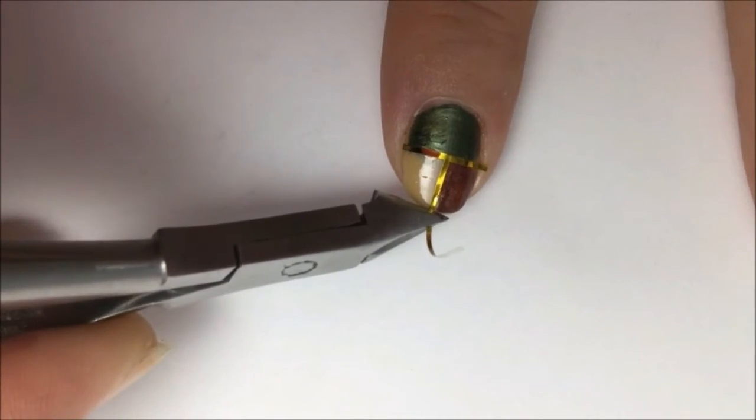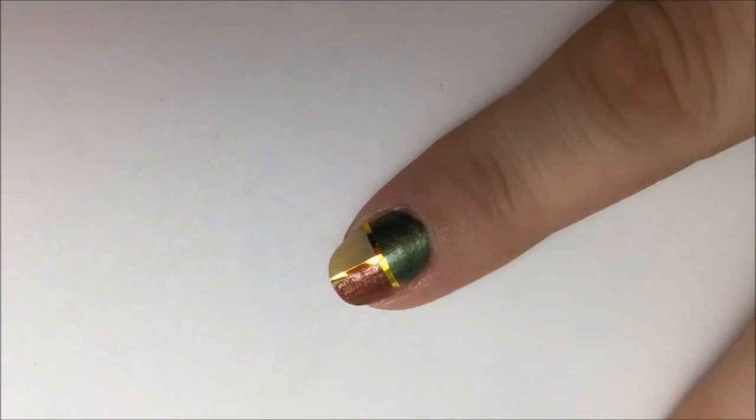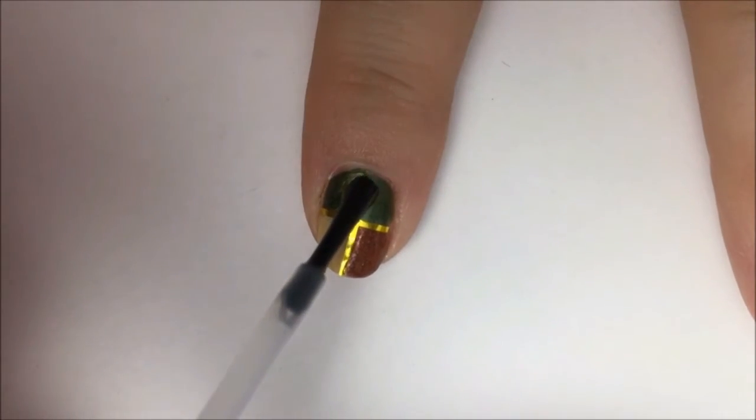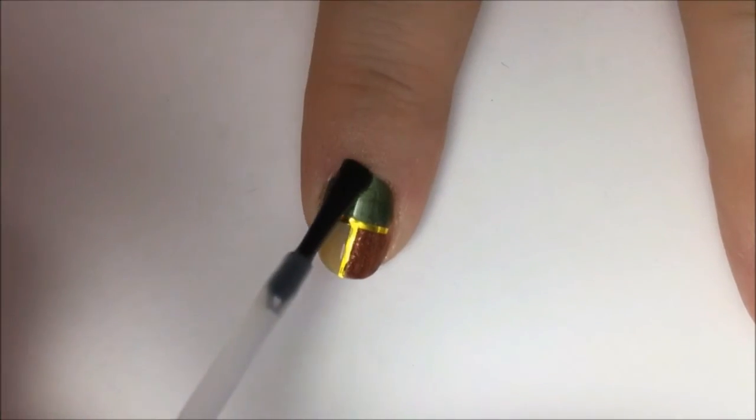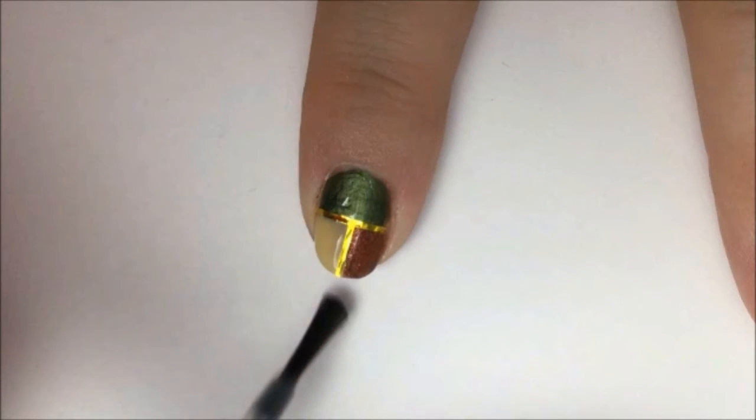Let it dry for a few minutes, then go over everything with a fast dry top coat to level everything out, protect and seal in that striping tape, make everything nice and shiny.